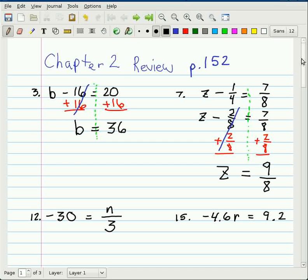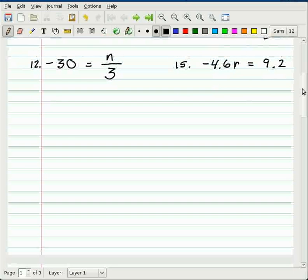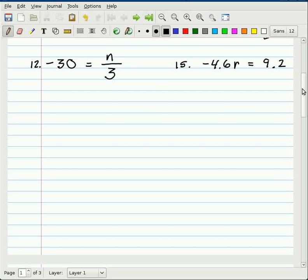Let's scroll down here and take a look at multiplication and division problems. Number 12, you have -30 = n/3. I like to have my variable on the left side of the equal sign. Remember, we still have that imaginary line down the middle there.